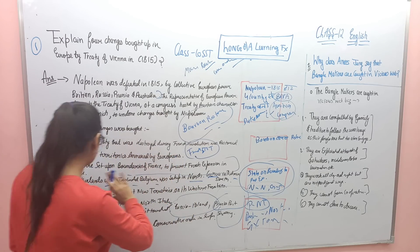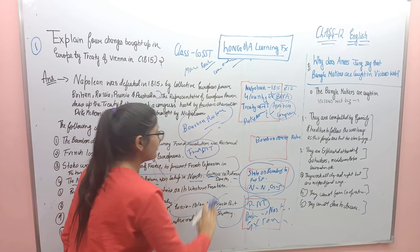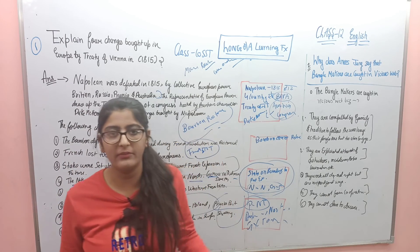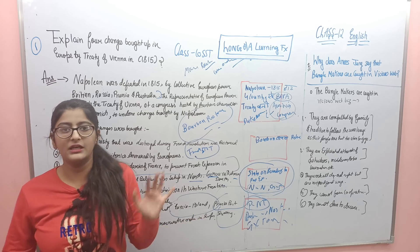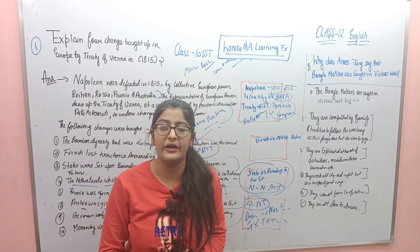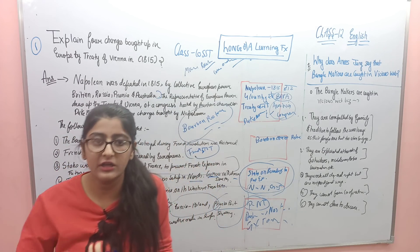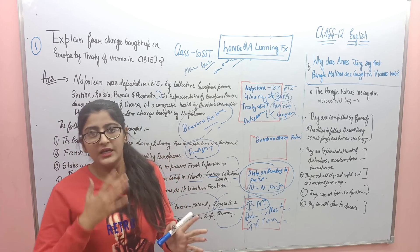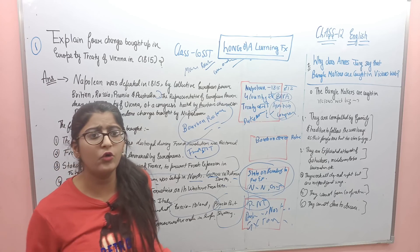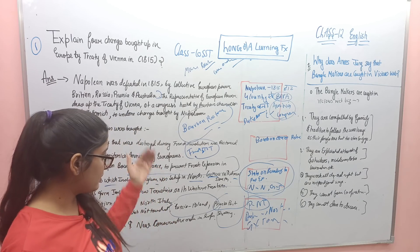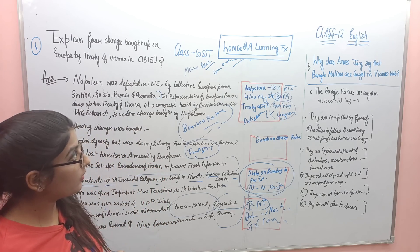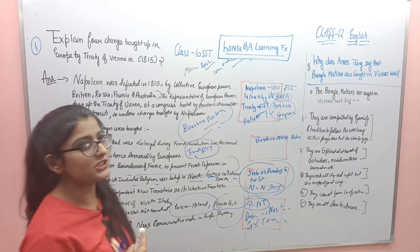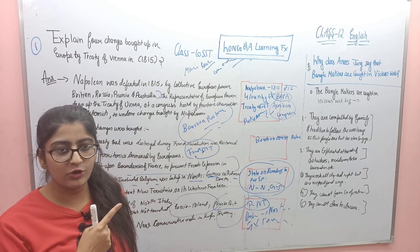Aise learn karna hai — apni language mein, side mein English mein parana hai. 'The Bourbon dynasty that was destroyed during the French Revolution was restored, French lost their territories annexed by Europeans, states were set up on the boundary of France.' Yeh ratta maarno ho — guys, agar ratta maar ke question learn kar rahe ho, toh samajh nahi aata. Tum poore keywords likh ke poora answer learn ho jaoge.